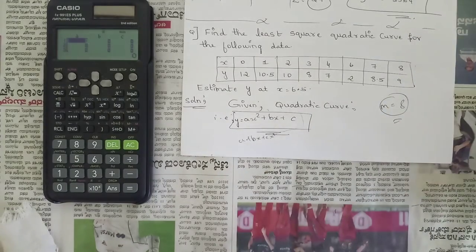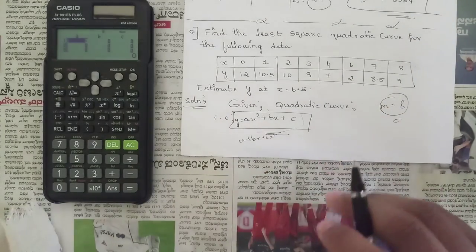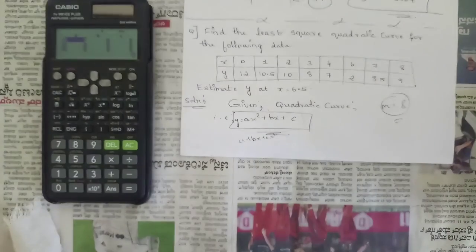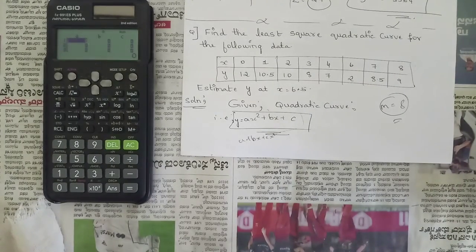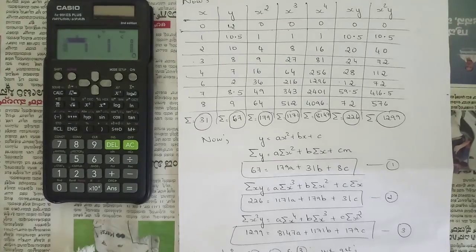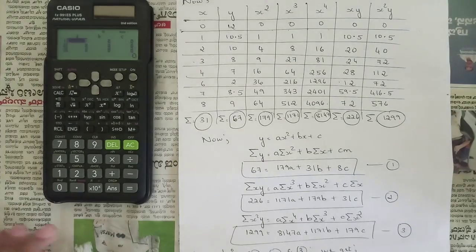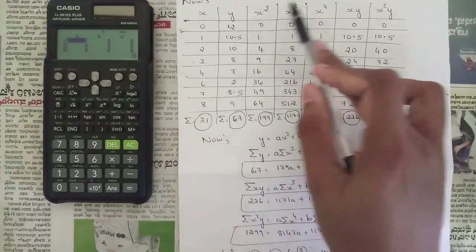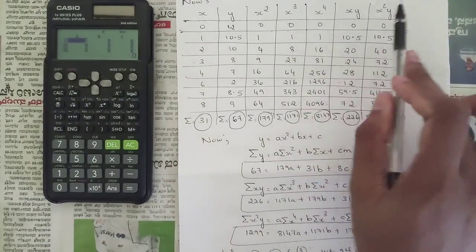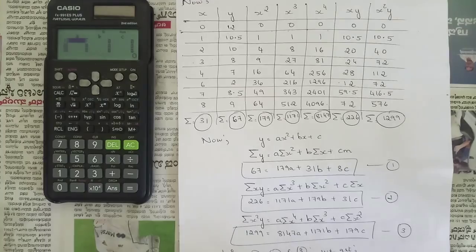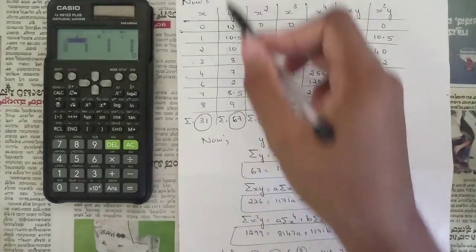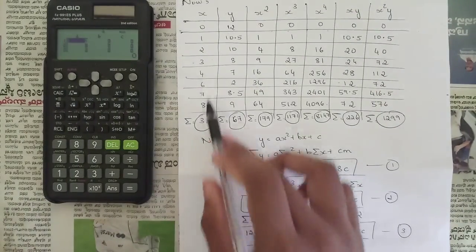Given the quadratic curve, we have three sets of equations for this curve. For that we have certain parameters we need to find and put in the tabular column. We need to find: summation of x, y, x², x³, x⁴, xy, and x²y.